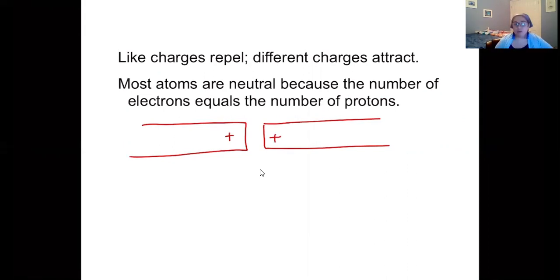Most atoms are going to be neutral because the number of electrons equals the number of protons. Let's say that an atom has plus six charge in its nucleus. It's got six protons totaling positive six, but it has six electrons orbiting around the outside and each electron has a negative charge. This mathematically comes out to zero.